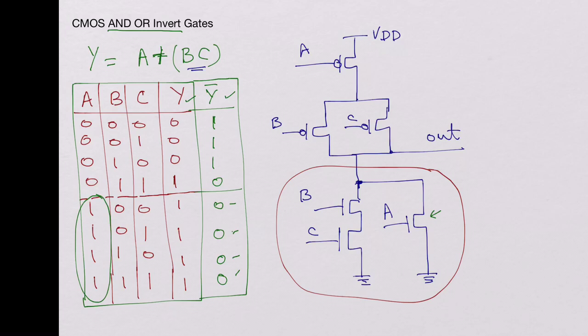And when B and C are high, these two are ON and the output is again pulled to low.